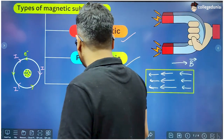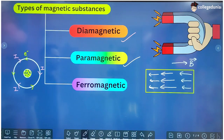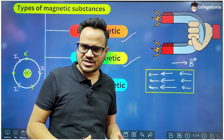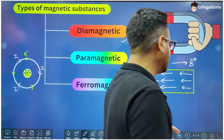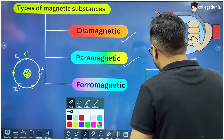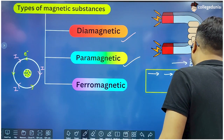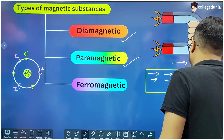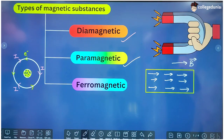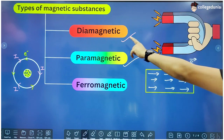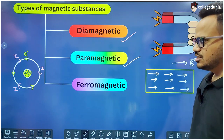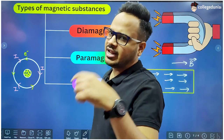A paramagnetic substance also has a net zero magnetic moment in the absence of an external magnetic field. But when this substance is kept in a magnetic field, all the dipoles align in such a manner that the internal magnetic field induced in the paramagnetic substance is in the direction of the external magnetic field — and this is also a weak magnetic field. So this substance gets weakly magnetized in the direction of the external magnetic field.